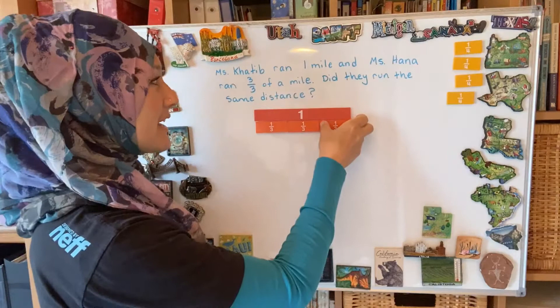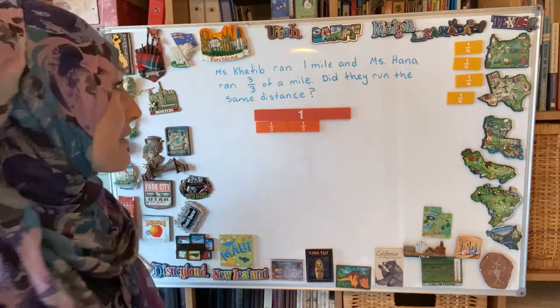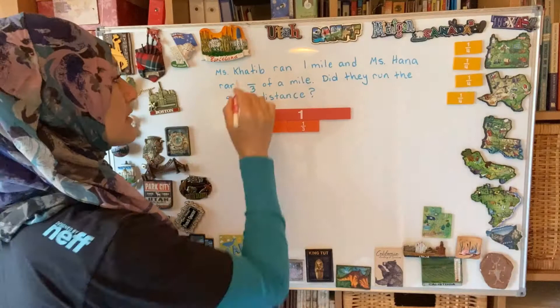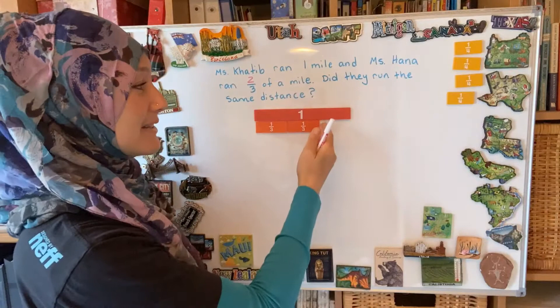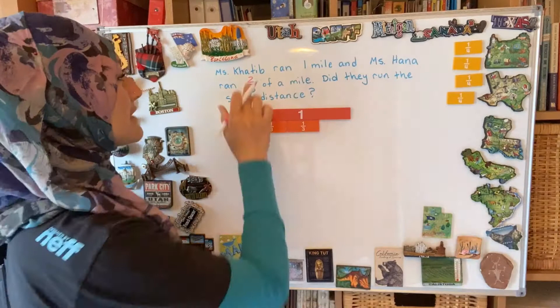Now let's say I ran a mile and Ms. Hannah ran two-thirds of a mile — our model would look like this. Here's one-third and here's one-third. Would these be the same amounts? No, they wouldn't, because this ends here — that's not a full mile — and this one is a full mile.